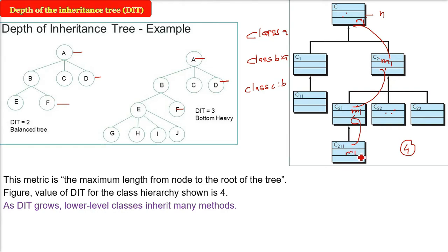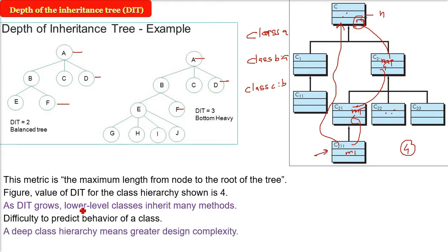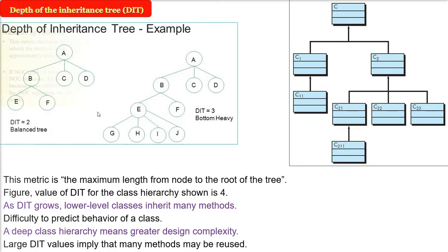So the depth of inheritance tree DIT should not be higher than what we are expecting. So difficulty we will have in order to predict the behavior of the class which are in the lower depth in the inheritance tree. So a deep class hierarchy clearly you see means that the design complexity of your design is quite higher. Large DIT values implies many methods can be reused because the C method has been reused to C2, C2 has been reused to C21, C21 is reused to C211. So reuse can be a thing here.